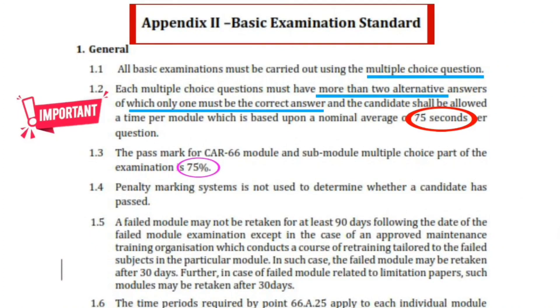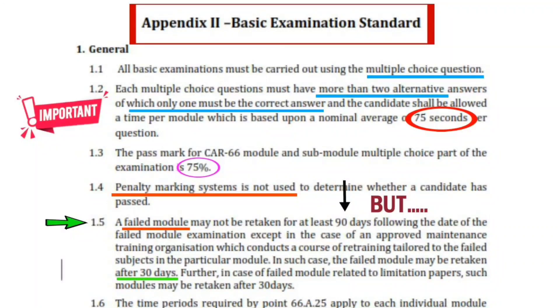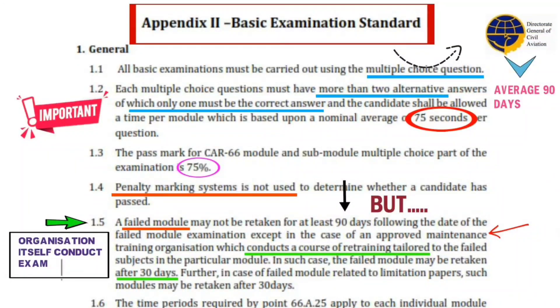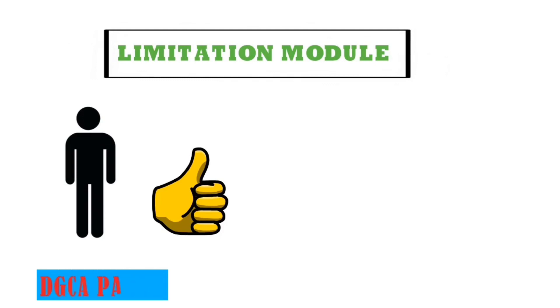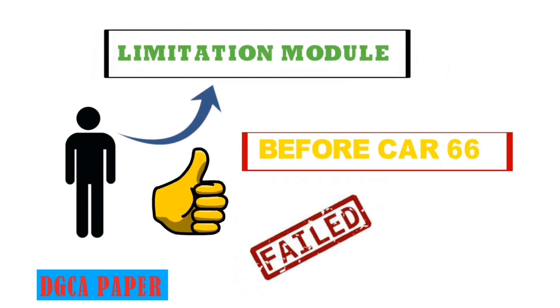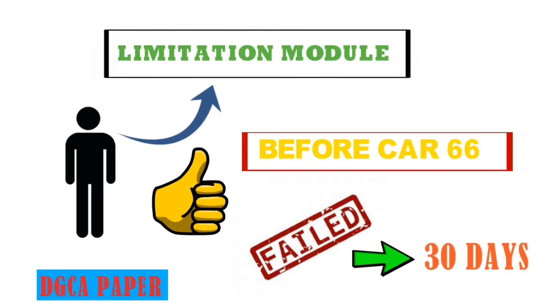The passing mark is 75% and there is no penalty marking. A failed module re-exam cannot be taken within 90 days. However, a student can reappear in 30 days if the maintenance training organization provides a re-training program on that failed module. This standard is applicable when an AME college conducts the basic exam themselves, whereas basic examinations taken by DGCA are generally at a gap of around 90 days. Also, for limitation modules — applicable to persons who cleared their DGCA paper before CR66 came into force — if you fail, you can re-appear in 30 days, but for others it is 90 days.